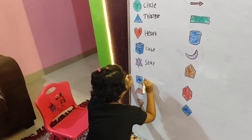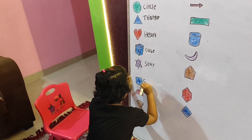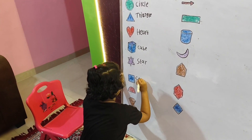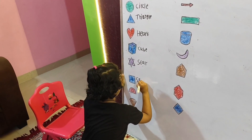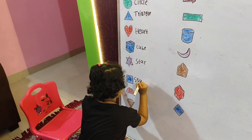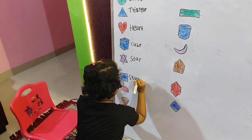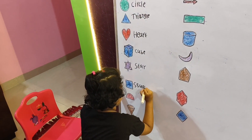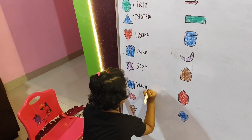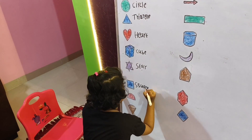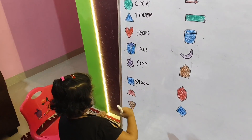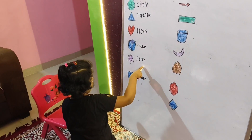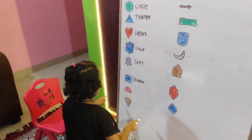The square is S-Q-U-A-R-E. The square is the fifth and sixth.